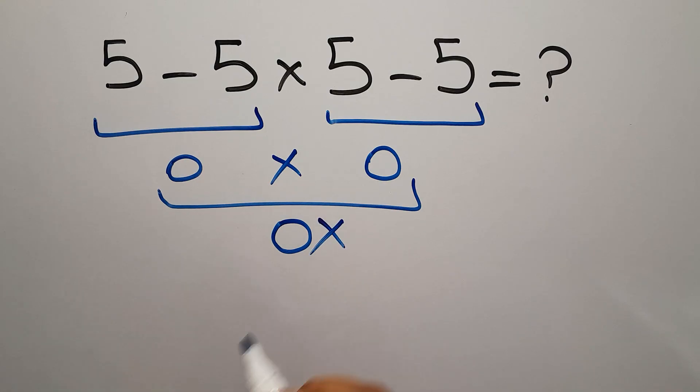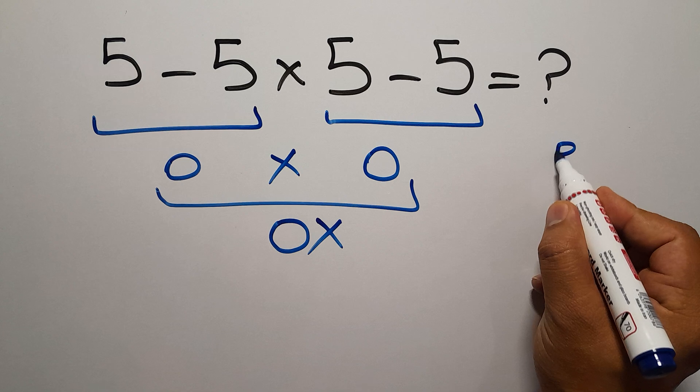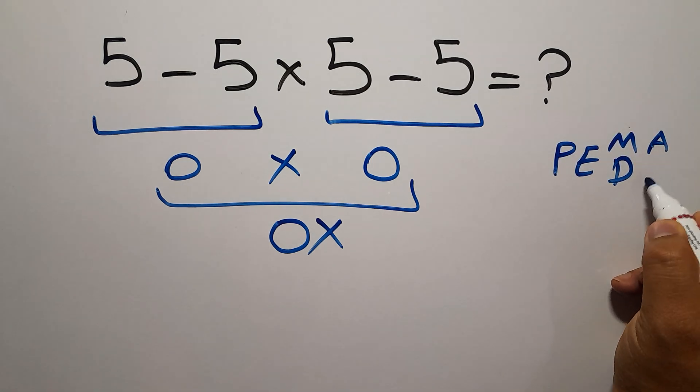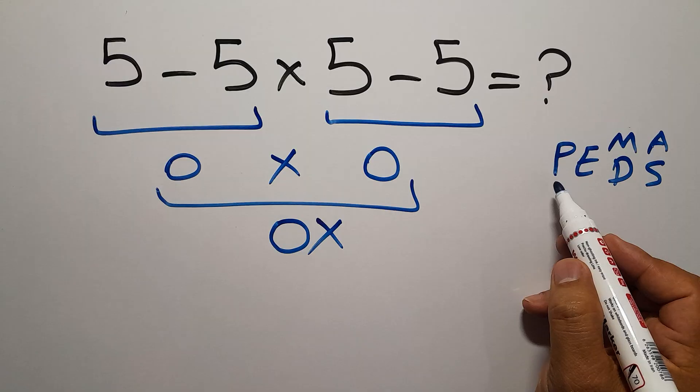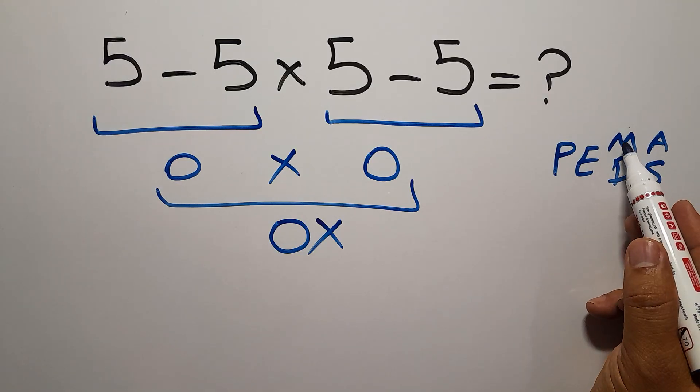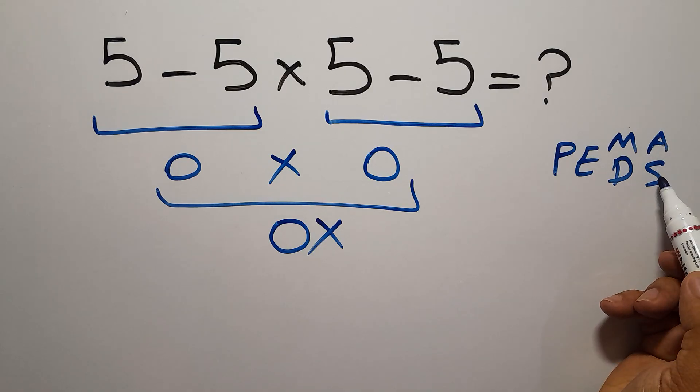But this answer is not correct because according to the order of operations, which is PEMDOS, P stands for parentheses, E stands for exponents, M and D stand for multiplication and division, and A and S stand for addition and subtraction.